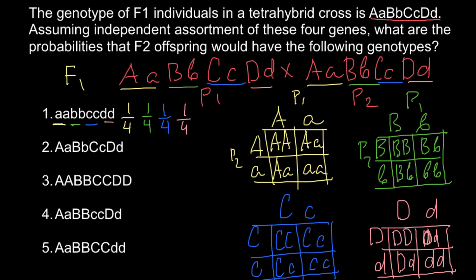Now we can find the probability of this genotype by simply multiplying all the individual probabilities together. This gives us 1 over 256.